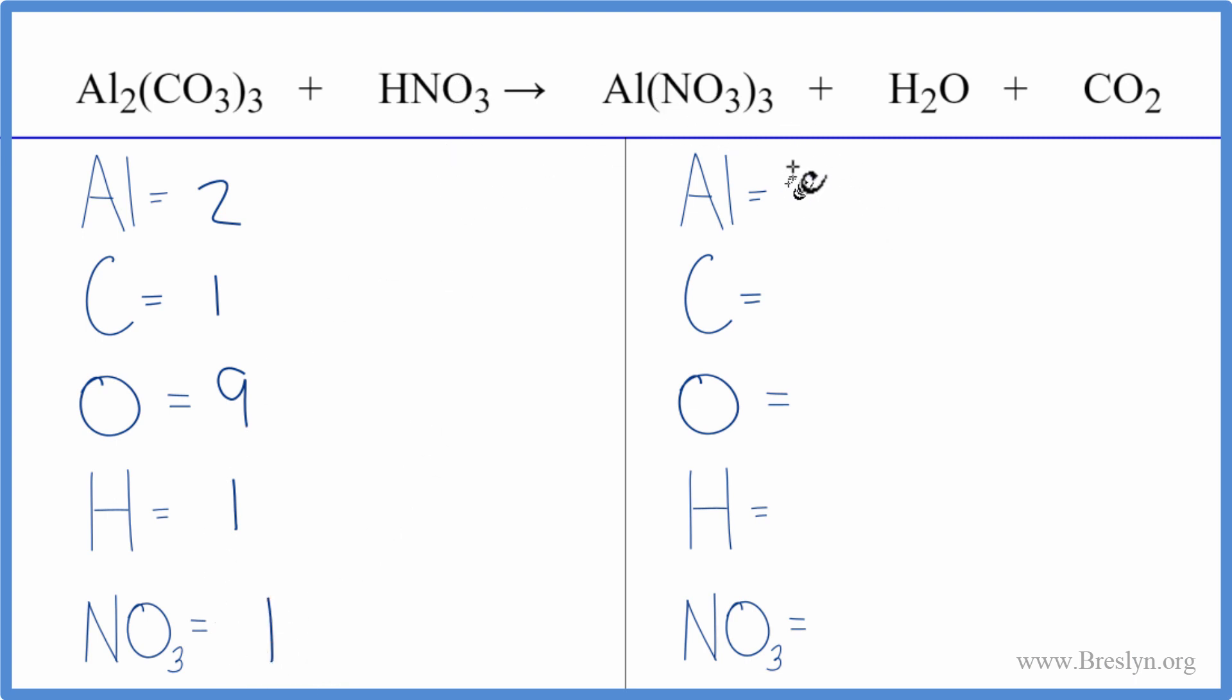On the product side, I have one aluminum. I have one carbon. I have oxygens, one plus the two. That gives me three oxygen atoms, two hydrogens, and then three of these nitrates, three of these NO3 ions. So I have three of those.